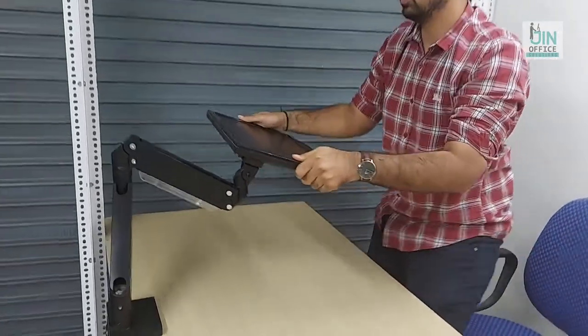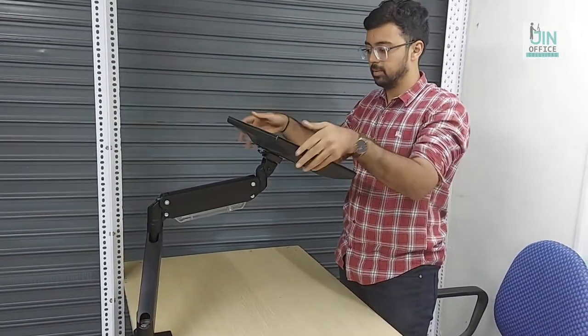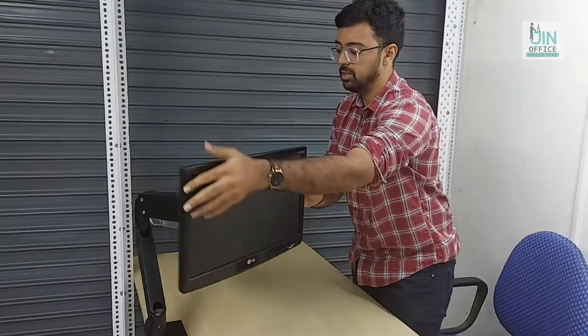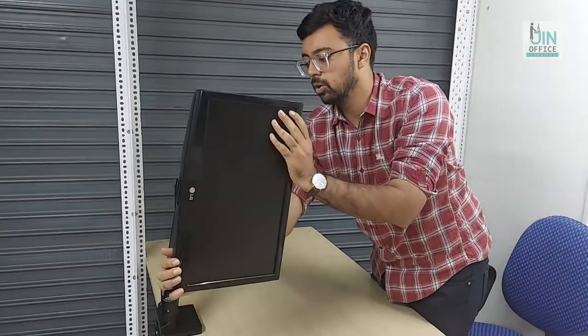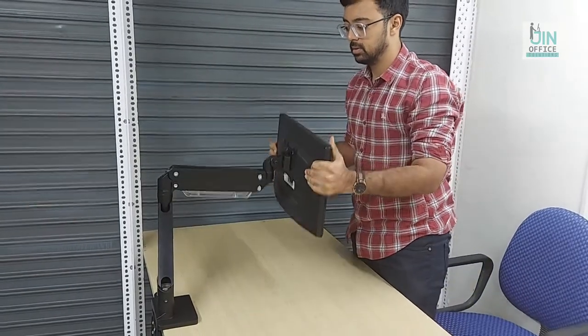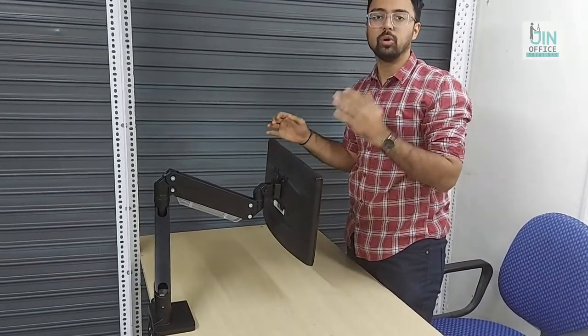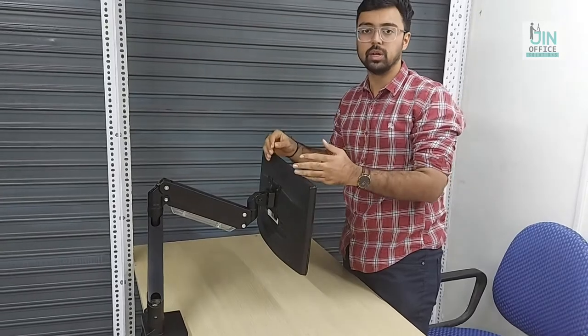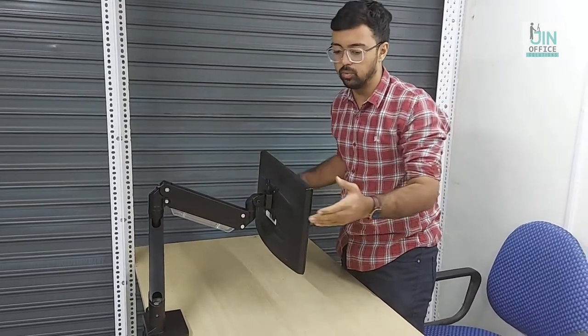This also has rotation, so if you need to rotate the monitor to portrait and landscape, you can do that as well. This monitor arm is made out of aluminium, so even though it is heavy duty, it is very light on the table and won't damage the tabletop.